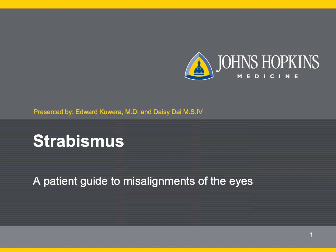Strabismus is a misalignment of the eyes that can occur at any age, but is most commonly seen in children. The danger of this problem in children is that they do not experience double vision as an adult would, and instead turn off the eye that is not straight, causing a poorly formed brain-eye connection with loss of vision and depth perception. Adults, on the other hand, may have debilitating diplopia or double vision.